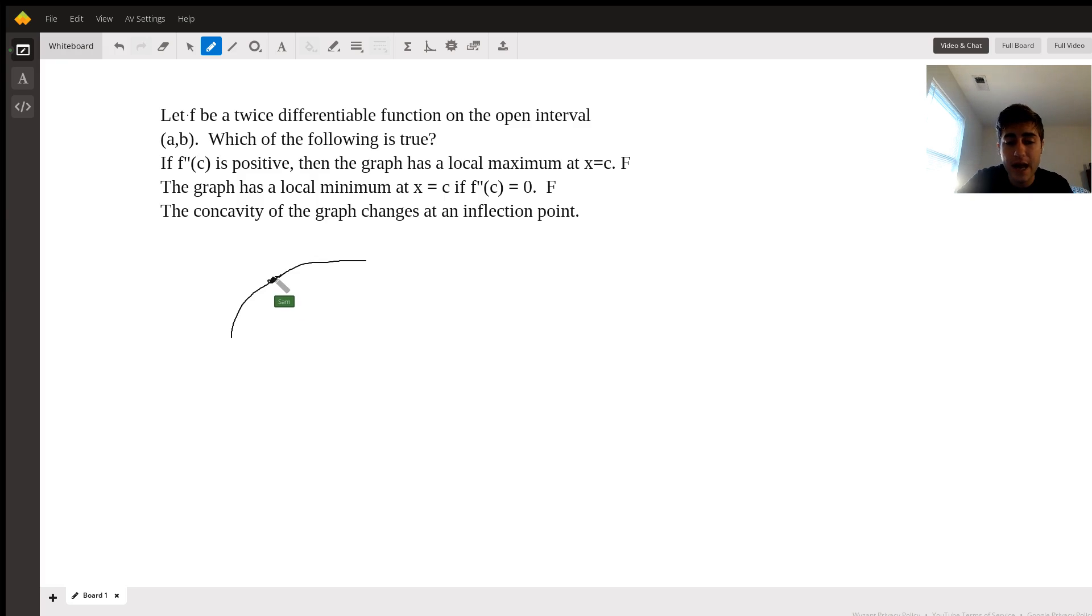So theoretically, you could have a point on a graph where the second derivative is zero at that moment, but it is still both negative or both positive on either side of that inflection point, of that point where the second derivative is zero.